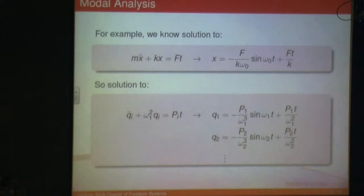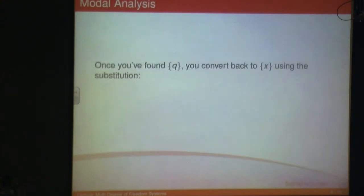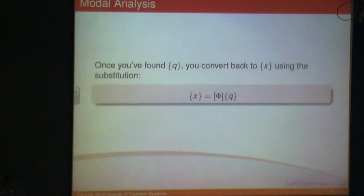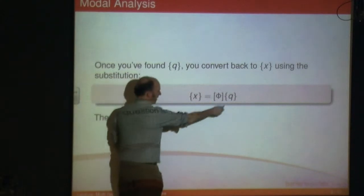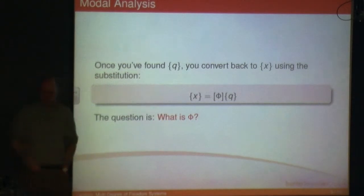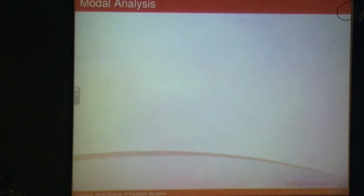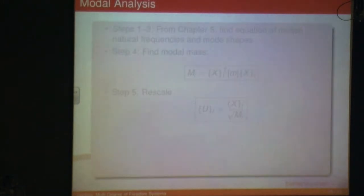That will give you answers for q1, q2, and so on. Then you make your substitution using x = φ·q and you'll get your displacements back. The key question is: what is φ? This is obviously quite an important key to unlocking this whole situation — we need to know what φ is. This is where that step-by-step process comes in.